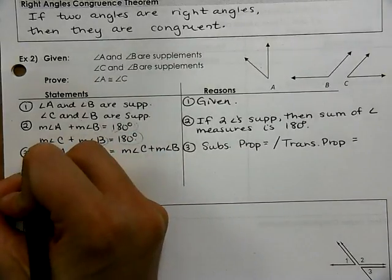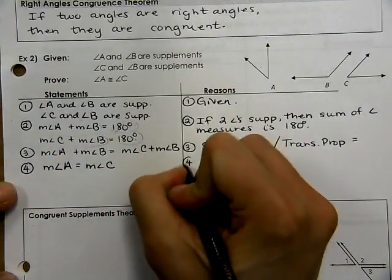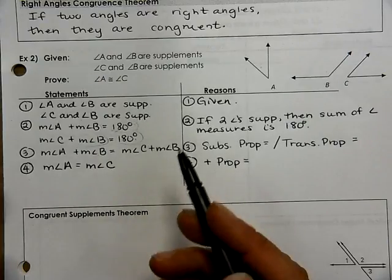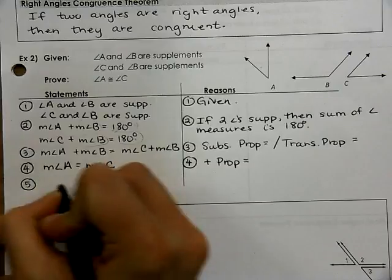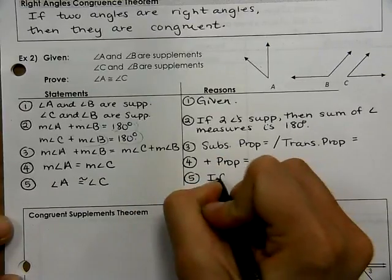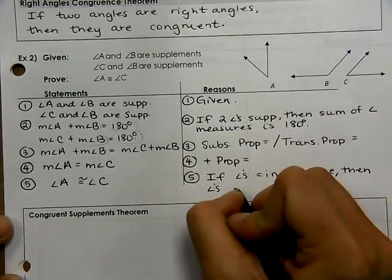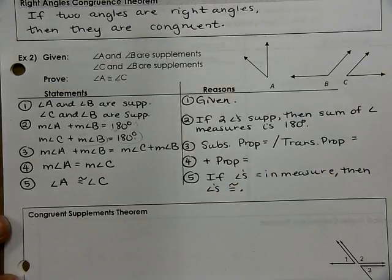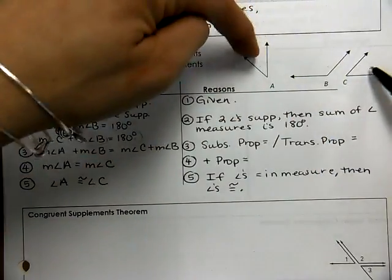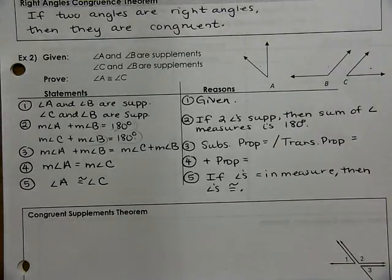Now that they're both equal to 180 degrees, I can set them equal to each other: measure of angle A plus measure of angle B equals measure of angle C plus measure of angle B. The reason is substitution property of equality or transitive property of equality — either one works here. Then I see measure of angle B on both sides. Subtracting it from both sides gives: measure of angle A equals measure of angle C.